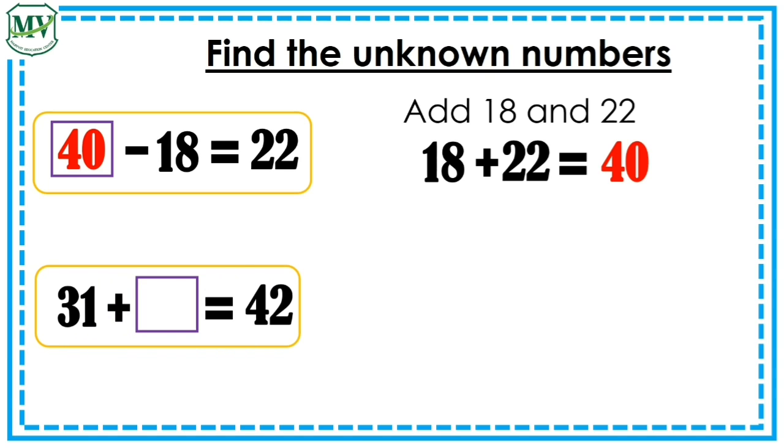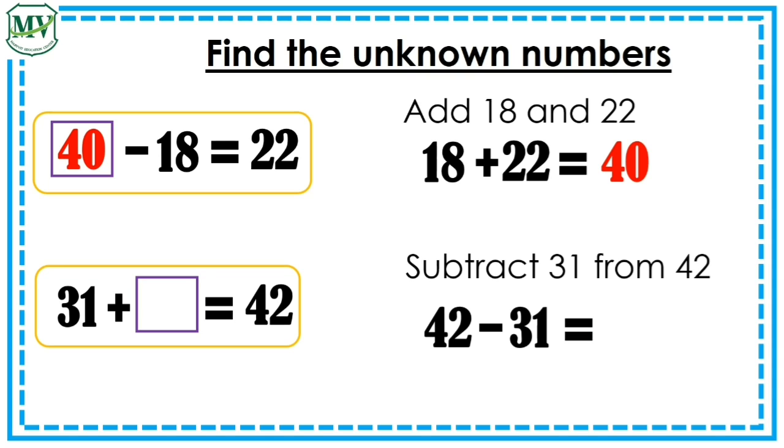Next, 31 plus blank equals 42. What do we do? That's right! Subtract 31 from 42. So, 42 minus 31 is equal to? That's right! It's 11. The missing number is 11. Very good!